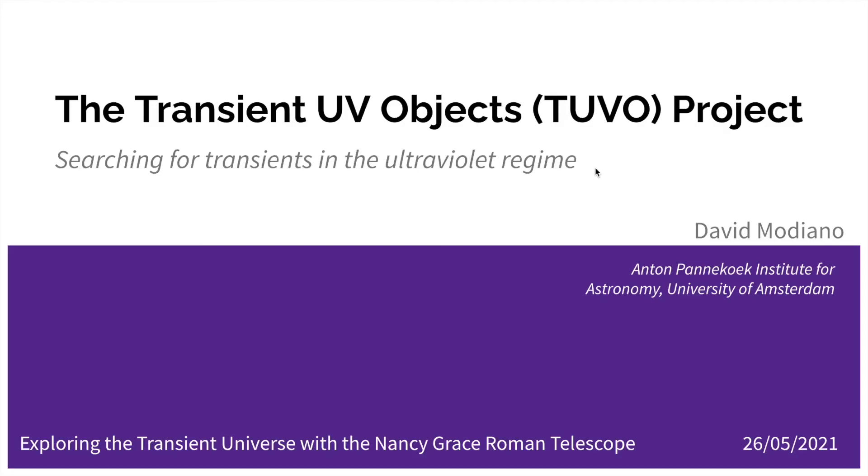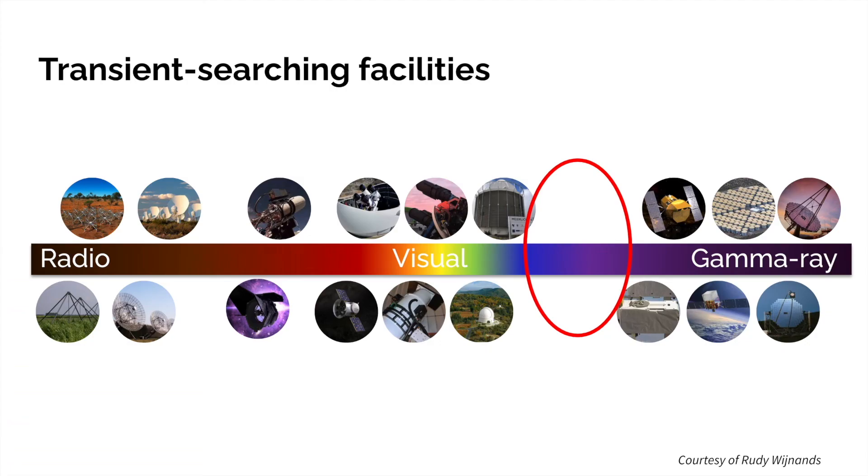I'll be talking to you about my poster, which is about the transient UV objects project. As we know, there are transient searching facilities operating really across the electromagnetic spectrum. But there's a bit of a gap in the UV, so we have no systematic large-scale transient searches occurring at the UV wavelength.